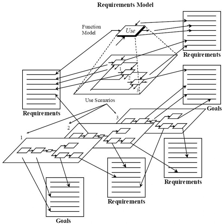Decomposition in computer science, also known as factoring, is breaking a complex problem or system into parts that are easier to conceive, understand, program, and maintain.